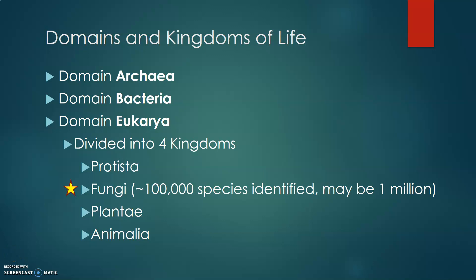Now we're going to talk about the first of the eukaryotic kingdoms you're going to need to know about for Bio 101, which are the fungi. There are about 100,000 species of identified fungi, but some scientists estimate there could be up to 1 million different species of fungi living on this planet right now.